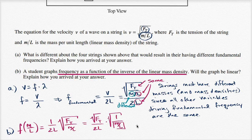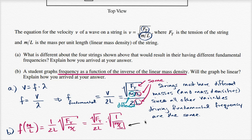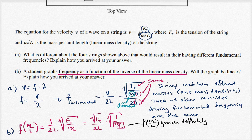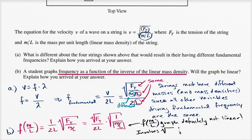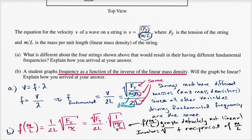So the graph of f as a function of m/L is definitely not linear, because it involves both a square root and the reciprocal of the variable (linear mass density). Those two features together mean the relationship is non-linear.